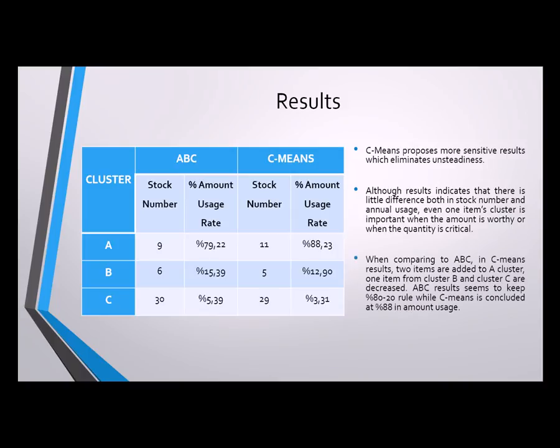When comparing to ABC, in the Siemens results two items are added to cluster A, while one item each from clusters B and C are decreased. ABC results appear to follow the 80-20 rule, while Siemens concludes with an 88% rule in amount usage.